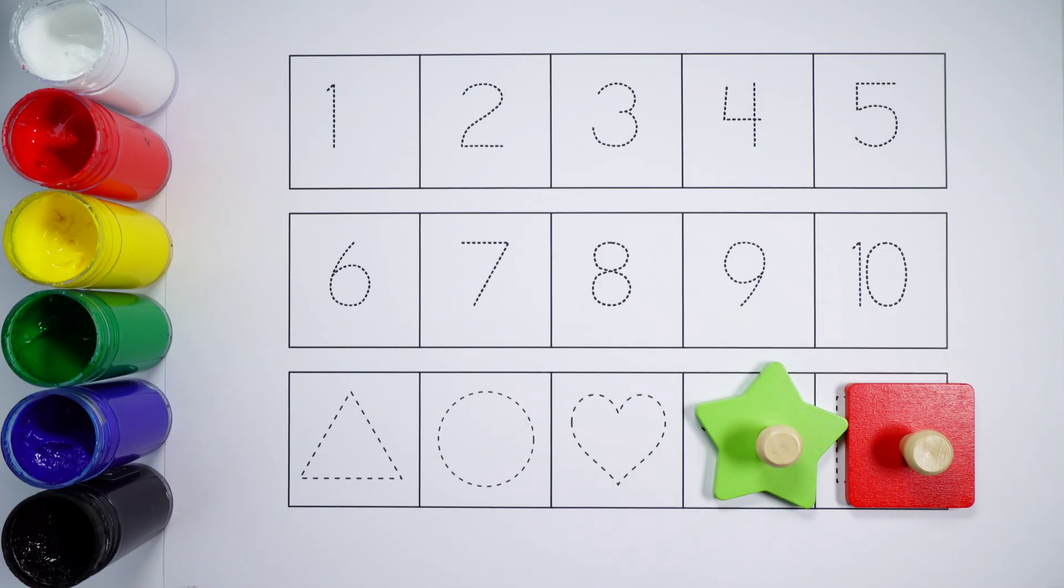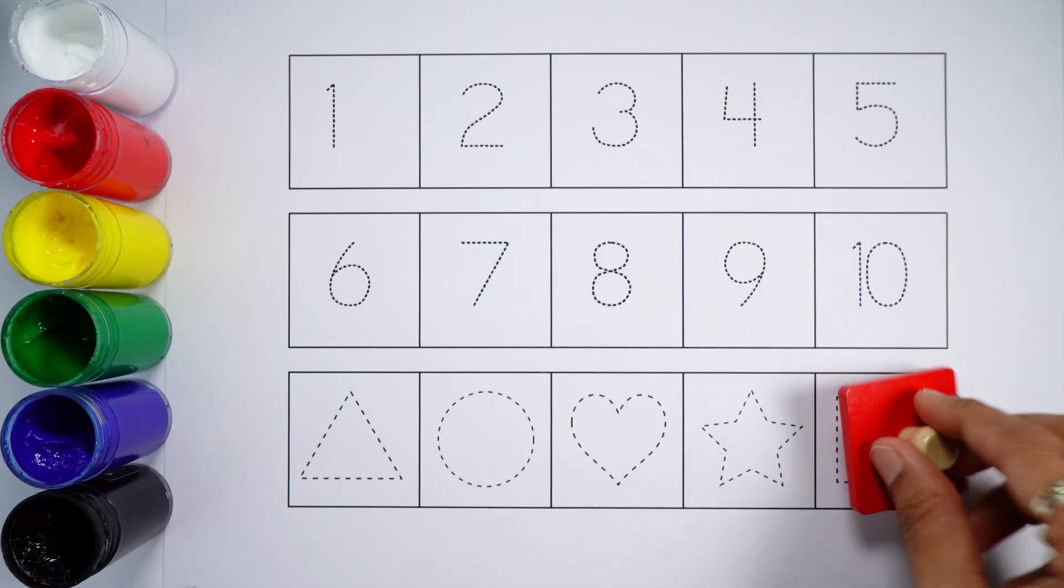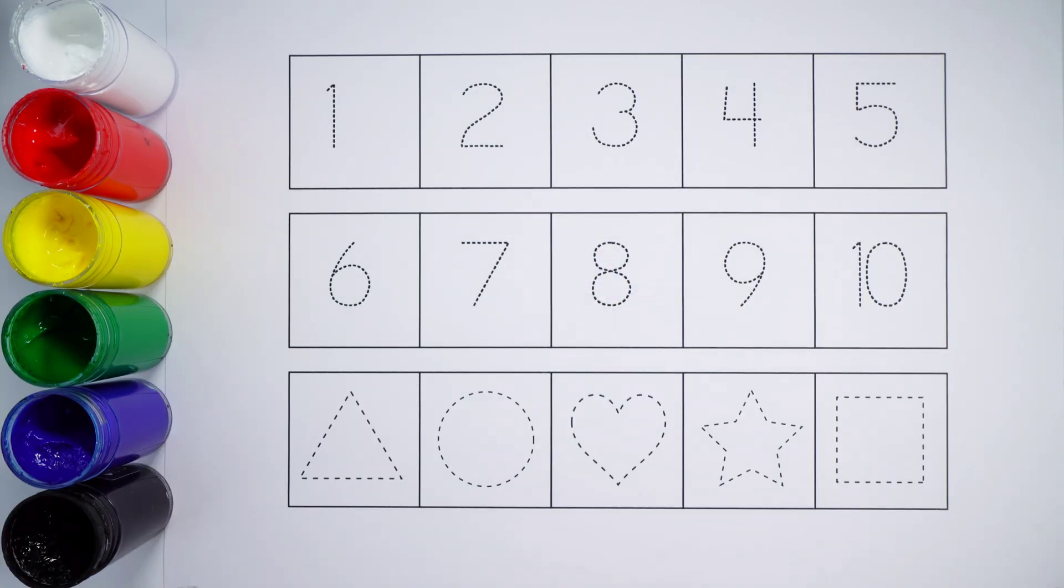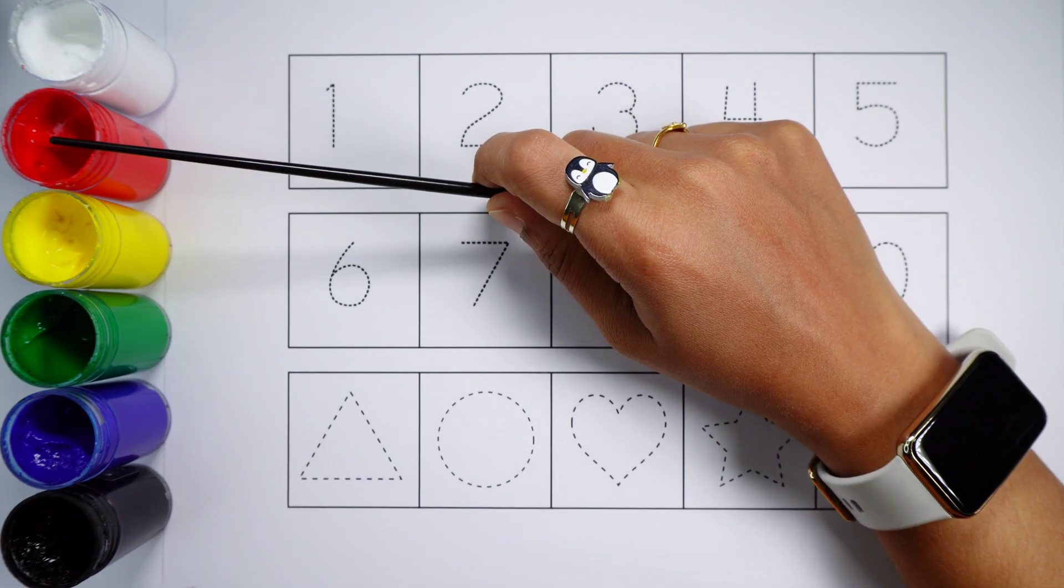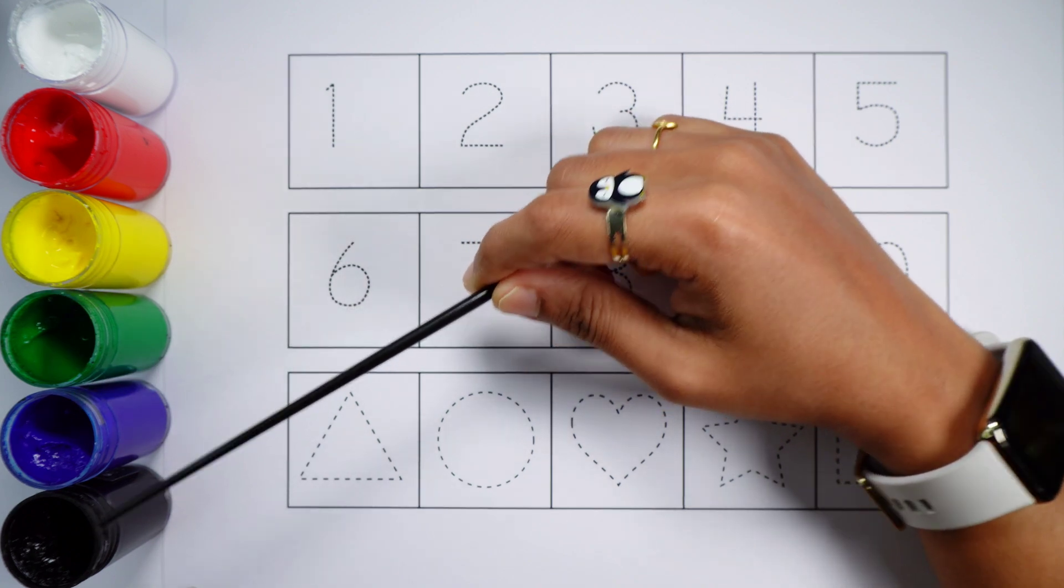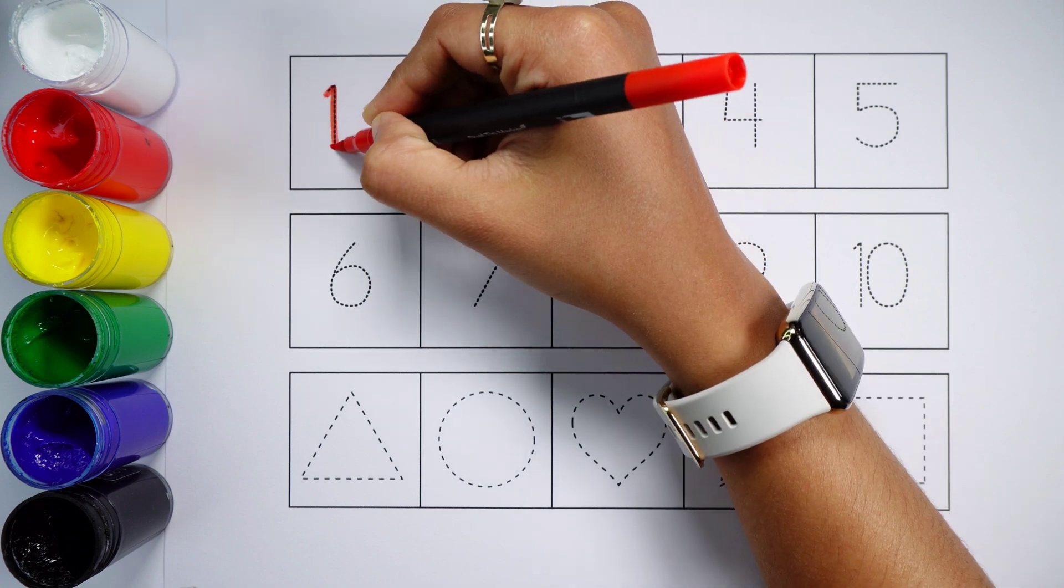...red heart. Star, a green star. Square, a red square. White color, red color, yellow color, green color, blue color, black color. Number one.